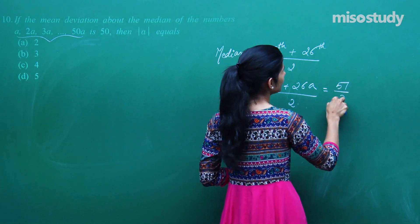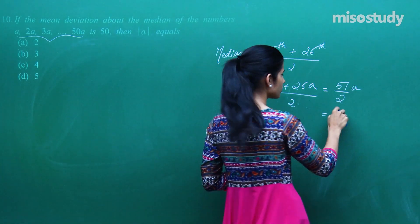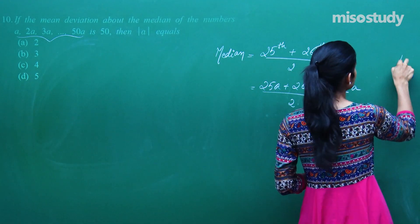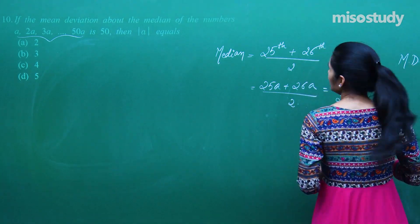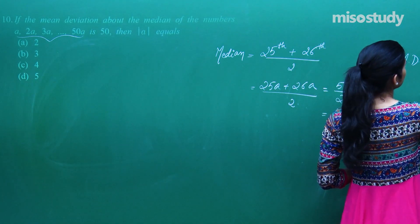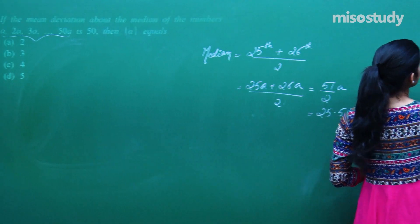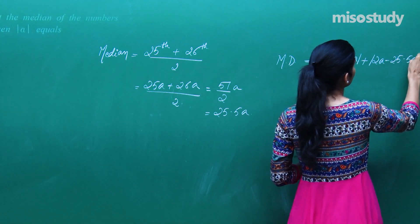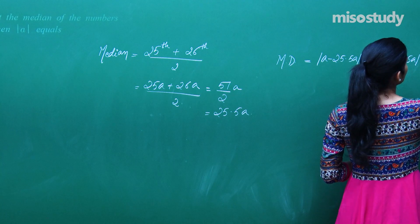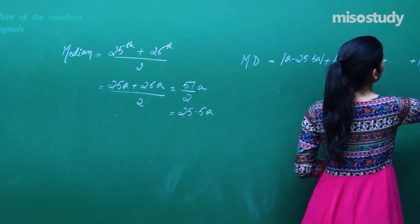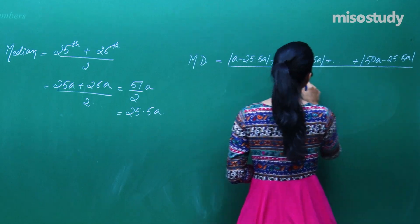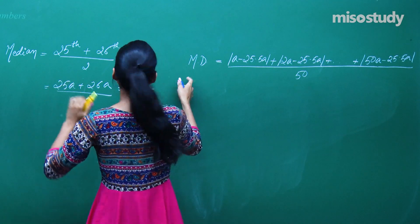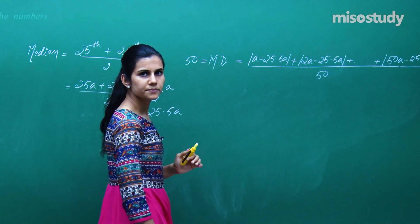So this will be 51 by 2A. So it is 25.5A. Toh mean deviation about median kaise nikaal hai? This is mod of A minus the mean which is 25.5A plus and then you have 2A as the next observation minus 25.5A plus and so on mod of 50A minus 25.5A whole upon how many observations are there? 50. Or mean deviation about median diya hua hai as 50.